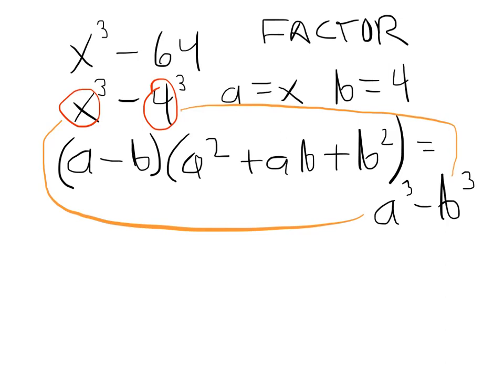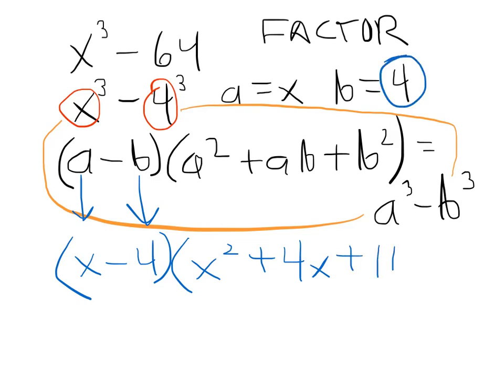So if a equals x and b equals 4, then I should be able to do this: x minus 4 times x squared plus a times b, which is 4 times x—not negative 4 times x, just 4 times x, because our b is 4—and then plus b squared, which is 16. And that's it, that's the answer.